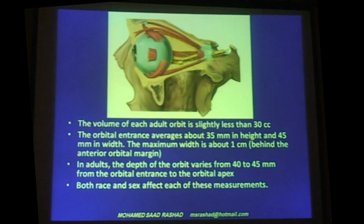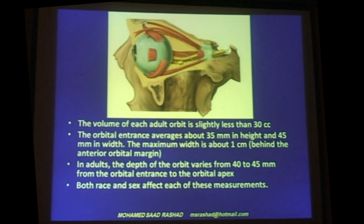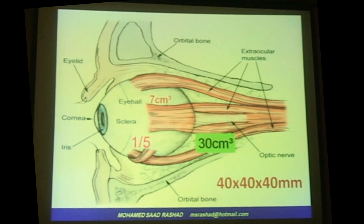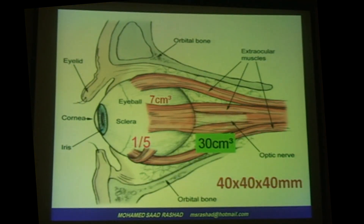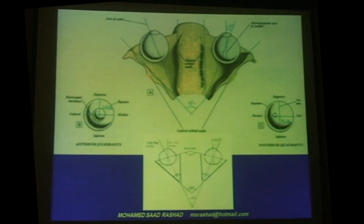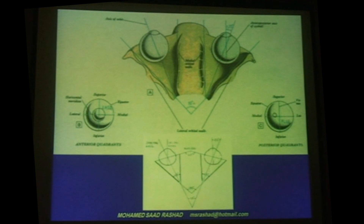The orbital volume is about 30 cc and the widest part is about 1.5 centimeters from the orbital ring. The depth is about 40 to 45 millimeters, and this differs with age and sex. The globe is about 7 cc and it's about one fifth of the volume of the orbit. The two lateral walls form an angle of 90 degrees, and the medial walls are parallel to each other and about 22 millimeters in width between each other.